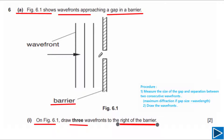This question is about diffraction — the spreading of waves when they pass through a gap. The distance between the two wave fronts is equal to the wavelength. The size of this gap is almost equal to the wavelength, which means maximum diffraction occurs and we need to draw circular wave fronts.